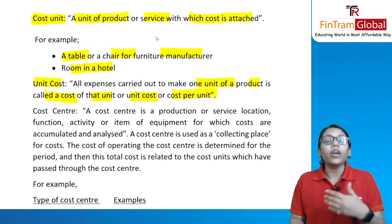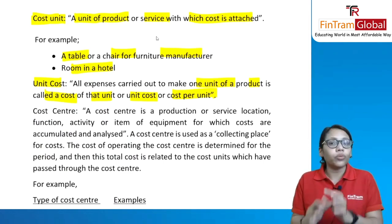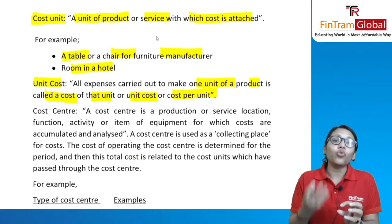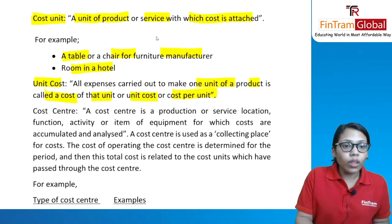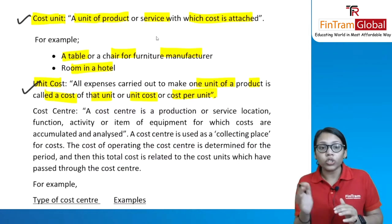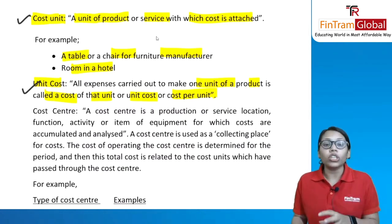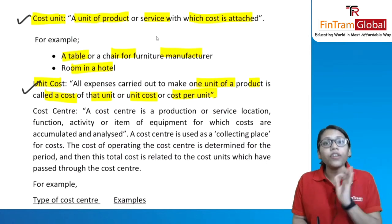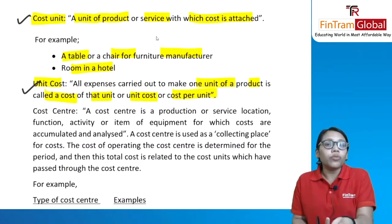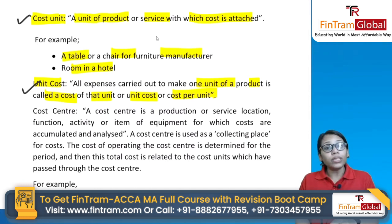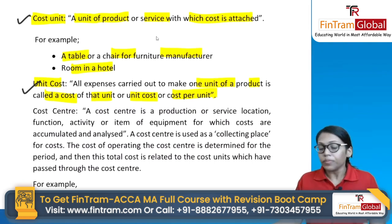Don't confuse cost unit and unit cost. Cost unit is the unit in which you express cost. Unit cost means the cost you incur to produce one particular good or service. Students often confuse these two — cost unit is the expression of cost, while unit cost is the cost incurred per unit of production.